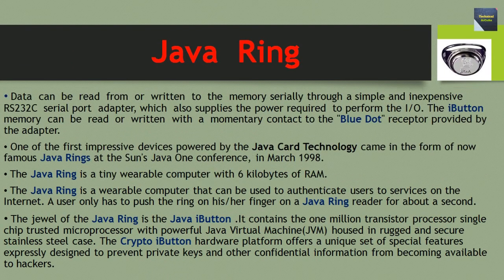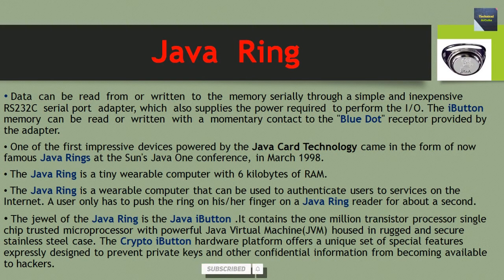Data can be read from or written to the memory serially through a simple and inexpensive RS-232C serial port adapter, which also supplies the power required to perform the I/O. The iButton memory can be read or written with a momentary contact to the blue dot receptor provided by the adapter. One of the first impressive devices powered by Java Card technology came in the form of the now-famous Java Rings at Sun's Java 1 conference in March 1998.